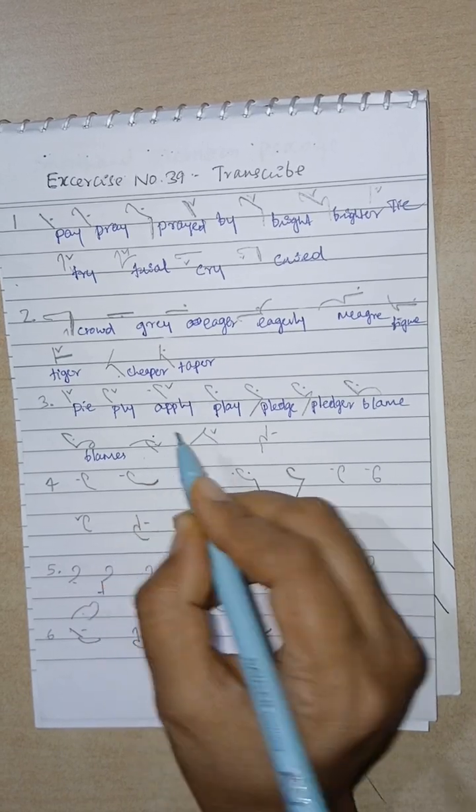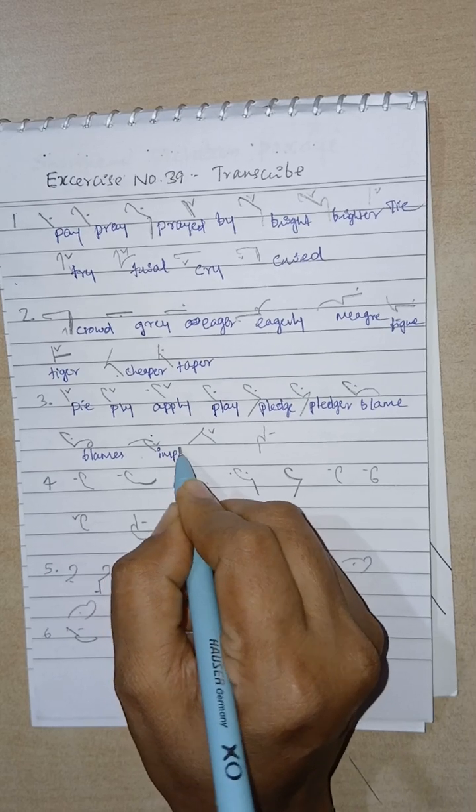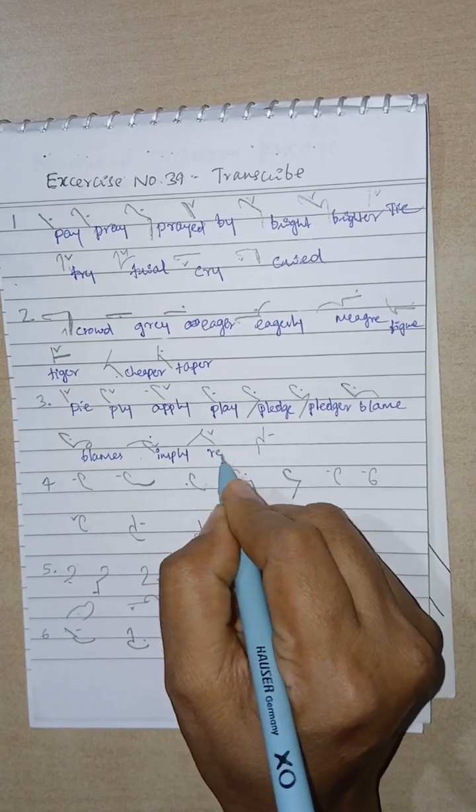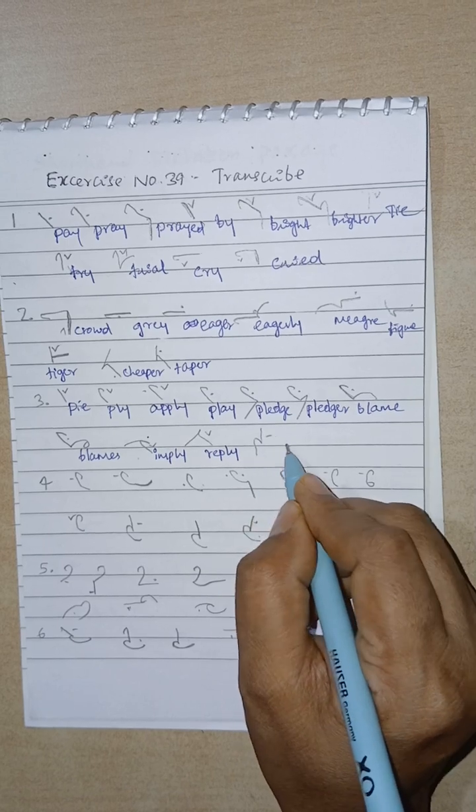Imply, I oval should be there. I, M, Pal, I diphthong. Reply, R, Pal, I diphthong. Total, T, Tal, O oval.